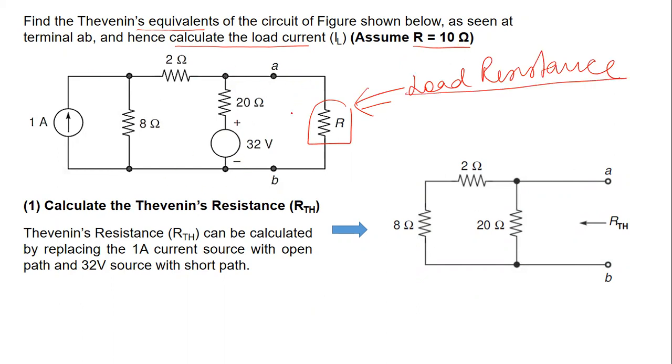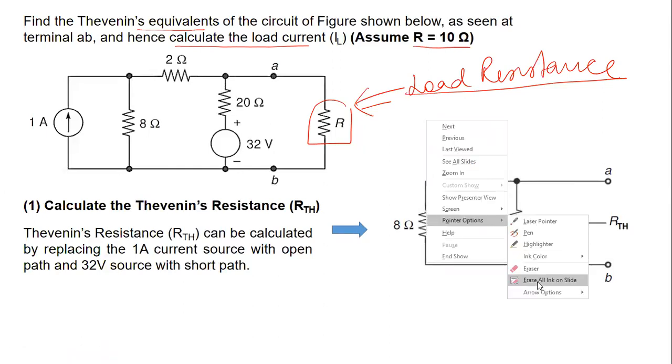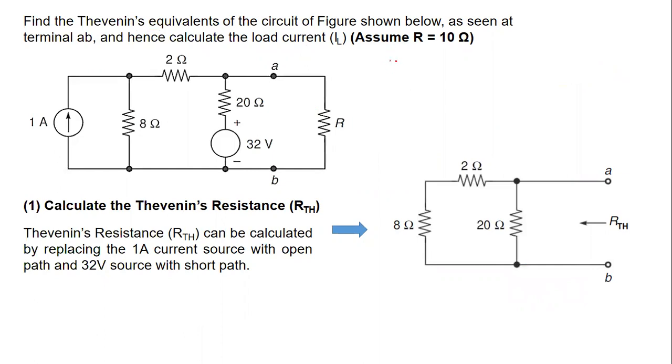To obtain the Thévenin's equivalent of any given electric network, we need two important parameters. Those parameters are RTH, which is Thévenin's resistance, and VTH, which is Thévenin's voltage. We can calculate any parameter first, so let us calculate RTH first of all.